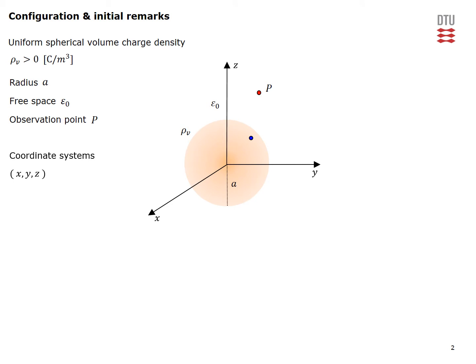First we introduce a rectangular XYZ coordinate system so that the origin of our volume charge density coincides with the origin of this coordinate system. Due to the spherical geometry of our charge configuration, we also introduce the associated spherical coordinate system with coordinates R, theta, phi. The position of our point inside is given by coordinates for which the radial coordinate is less than or equal to A, and for the point outside, the radial coordinate is greater than or equal to A. Alternatively, we can specify the location of our observation points by the usual position vector.